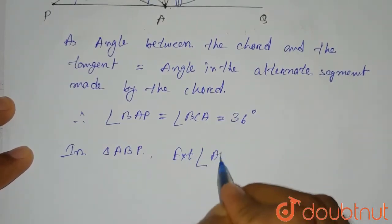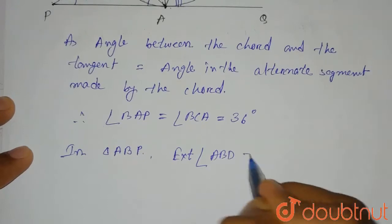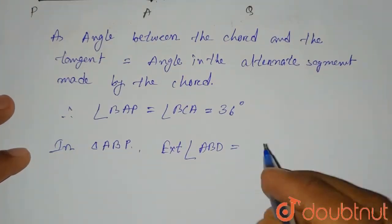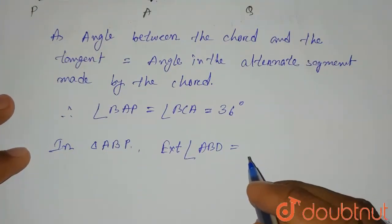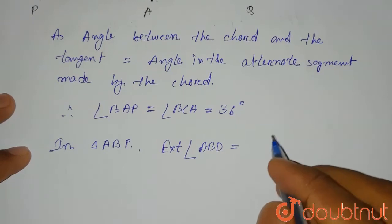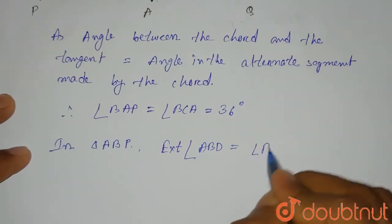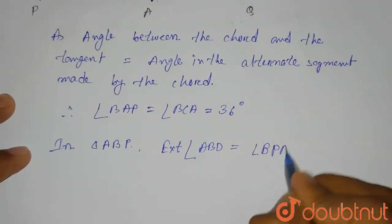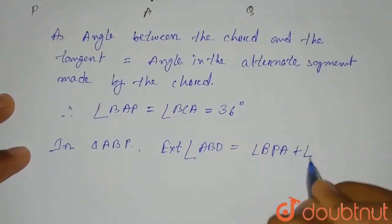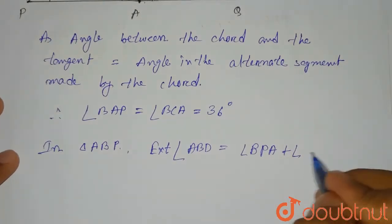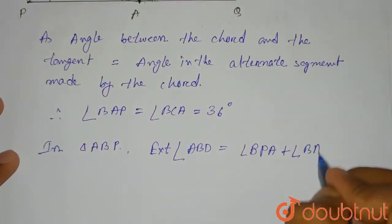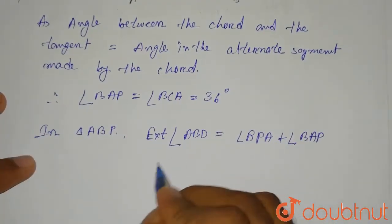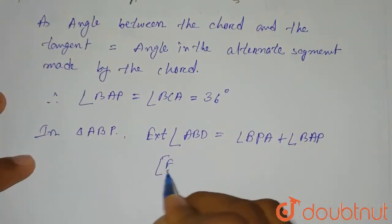...the external angle ABD is equal to the sum of the two internal opposite angles, that means it will be angle BPA plus angle BAP.